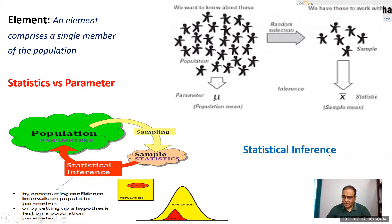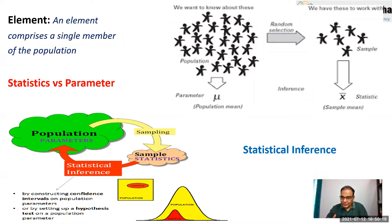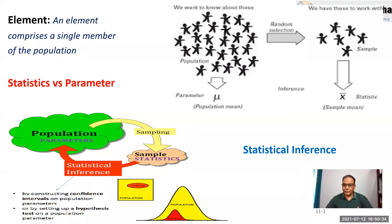Statistical inference is the process of concluding about the population on the basis of the sample. We are not concluding for the target population or the sample — we are concluding for the whole population. That's why I always say don't put the area of your target population in the title of the thesis or paper, because your objective is to draw conclusions about the population, not just the sample or target population.